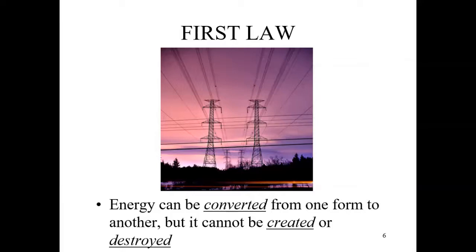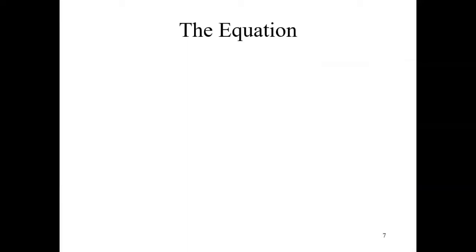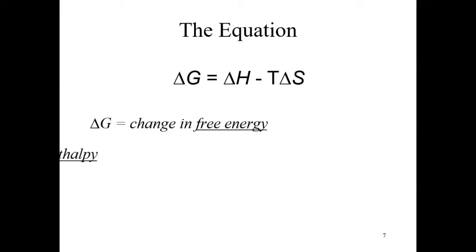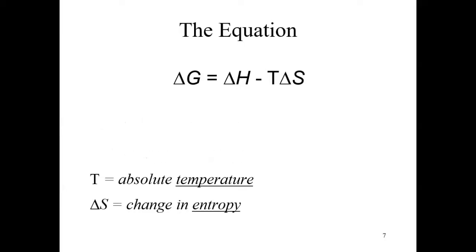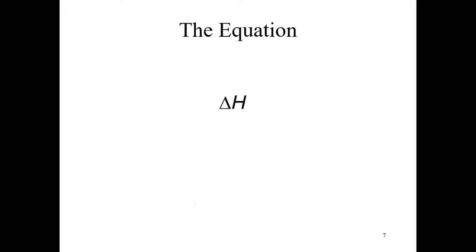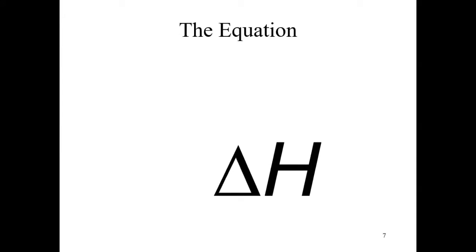Remember, what we're trying to do is arrive at a sense of what determines whether a process is spontaneous or not. We're going to eventually arrive at the equation that will be the mantra of this unit: ΔG = ΔH − TΔS. ΔG is the change in free energy, ΔH is the change in enthalpy, T is the absolute temperature, and ΔS is the change in entropy — a property we'll study in our next session. For tonight, we are going to focus on enthalpy, ΔH.